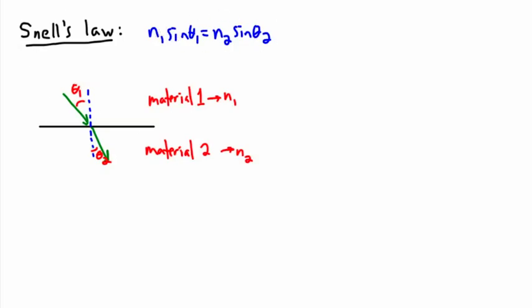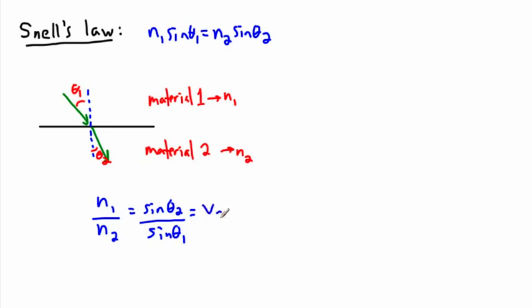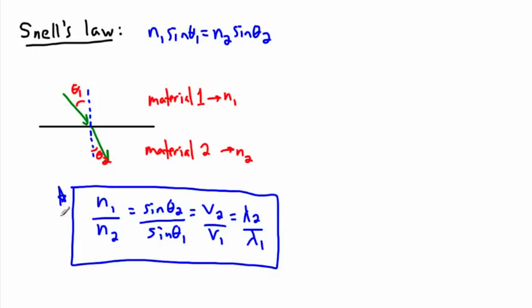I personally prefer a different version of Snell's Law. If you take n1 over n2, and move the n's to the same side, you end up with n1 over n2 equals sine theta 2 over sine theta 1. I like this version better because it's more powerful — you can add extra pieces: it also equals v2 over v1, which also equals lambda 2 over lambda 1. A nice trick: n goes 1 over 2, and everything else goes 2 over 1.